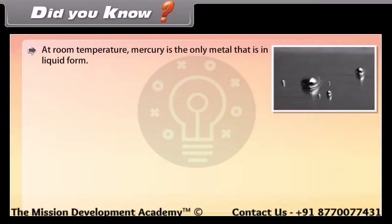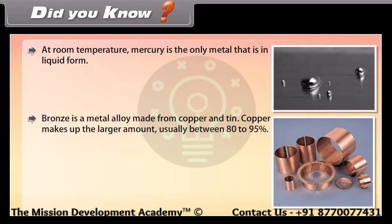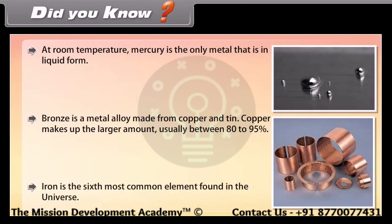Did you know? At room temperature, mercury is the only metal that is in liquid form. Bronze is a metal alloy made from copper and tin. Copper makes up the larger amount, usually between 80-95%. Iron is the sixth most common element found in the universe.